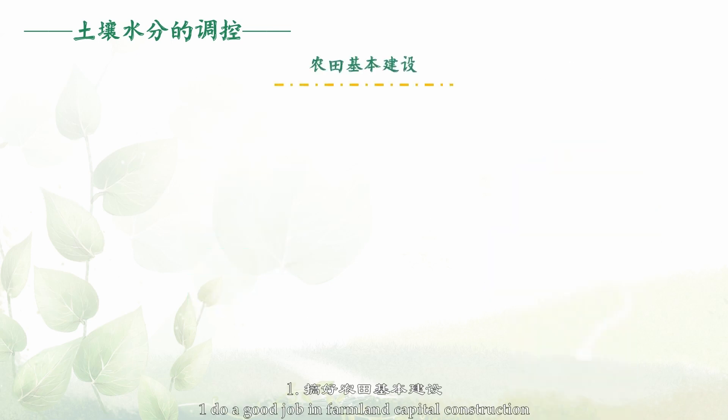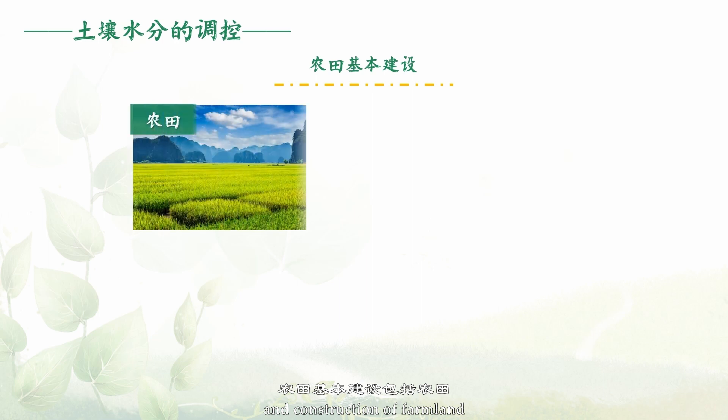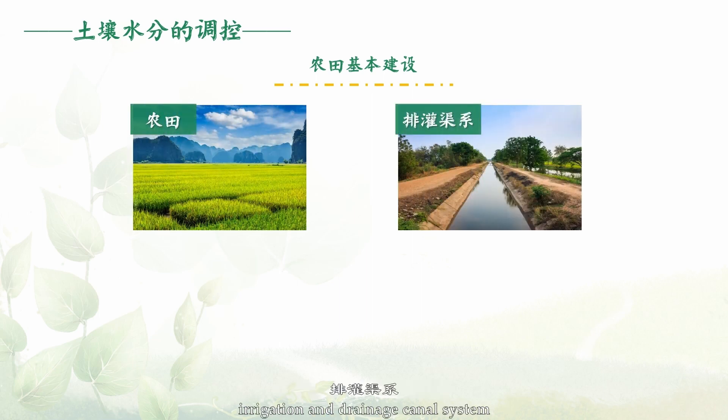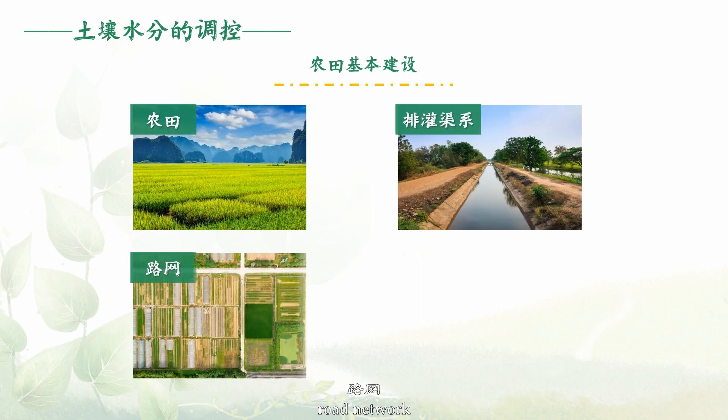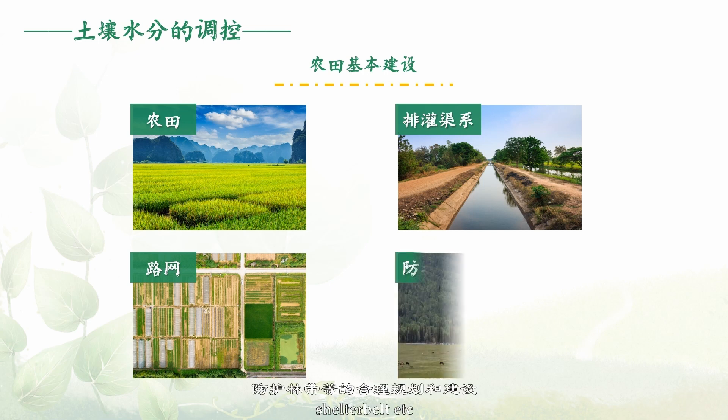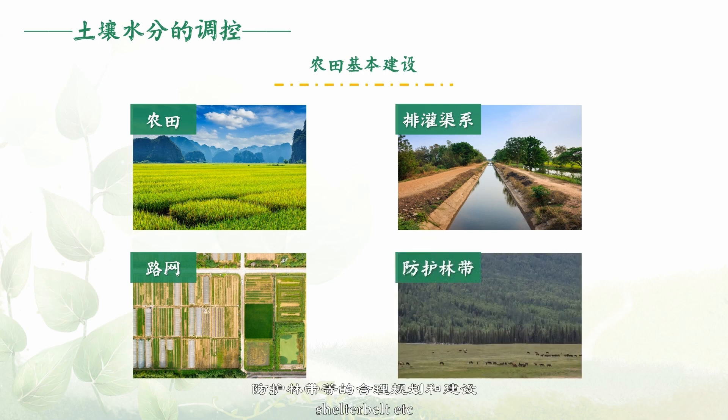1. Do a good job in farmland capital construction. Farmland capital construction includes rational planning and construction of farmland, irrigation and drainage canal systems, road networks, and shelter belts.